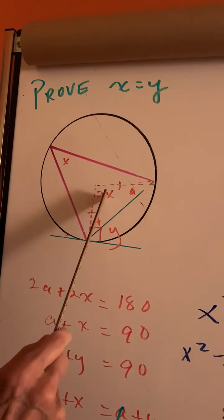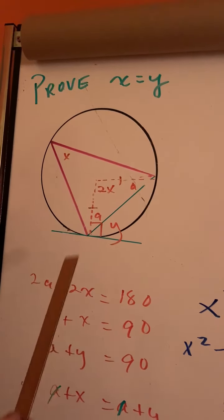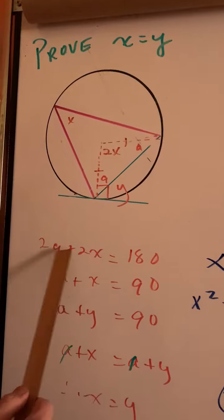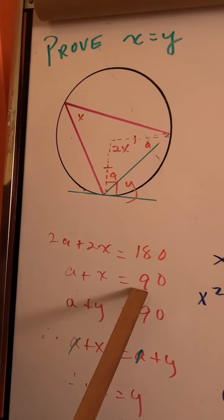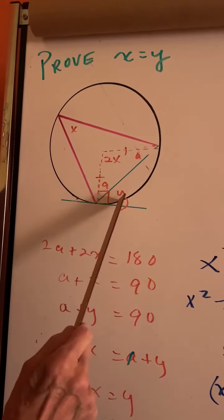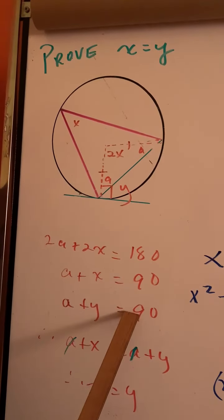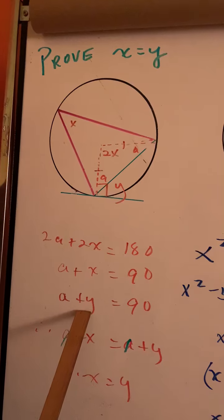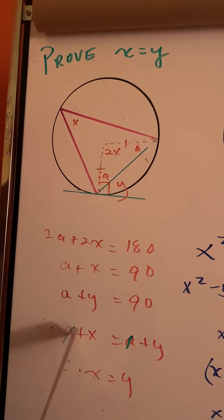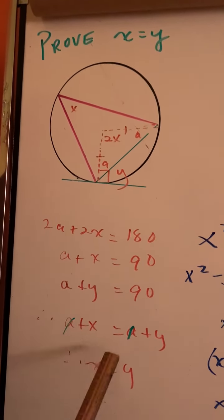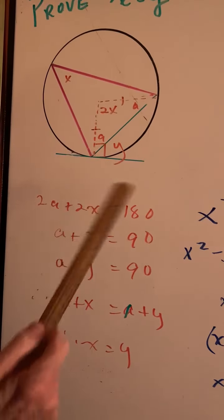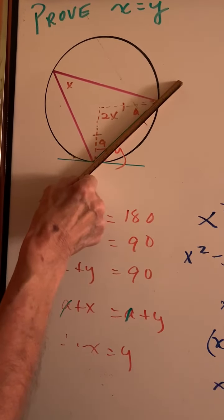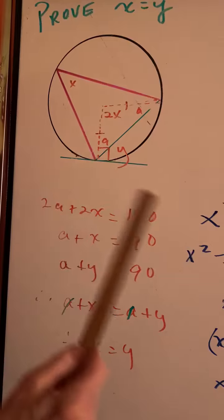So we have 2a plus 2x is 180. Down here. Divide by 2. And also a plus y is 90. And both of these are 90. That means this equals this by the axiom of equality. The a is cancelled. So the x equals y. So the angle between the tangent and the chord is equal to the inscribed angle.